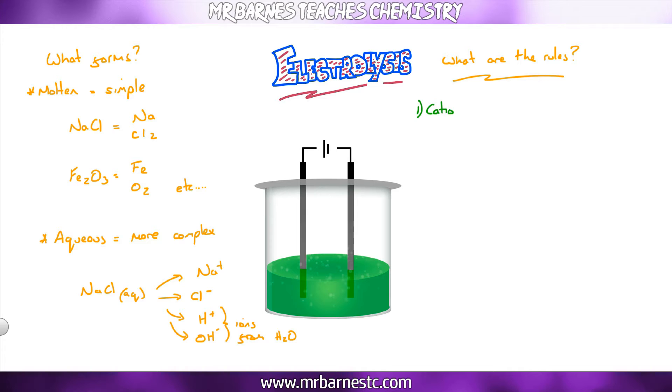If we start off with the cations, the positive ions, nice and simply, the least reactive ion will form and turn back into its atom or molecule. For example, sodium chloride, you can either have Na+ or H+ turning back to normal. Usually if it's in group 1, 2, or 3, it's highly reactive. If it's in the transition metals in the middle, it's less reactive. Therefore, in between is our H+.